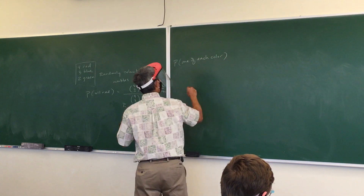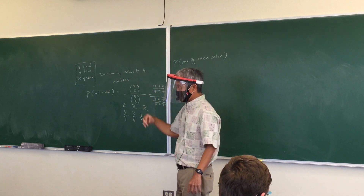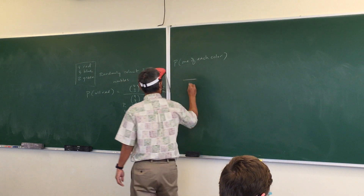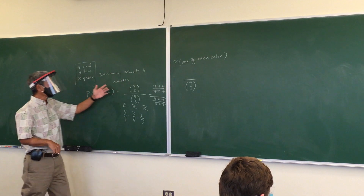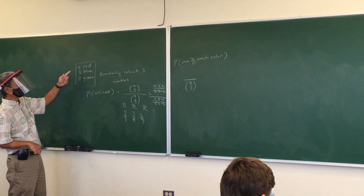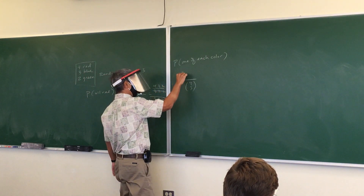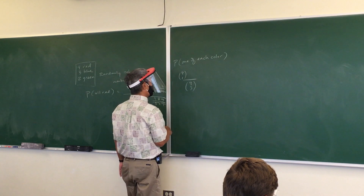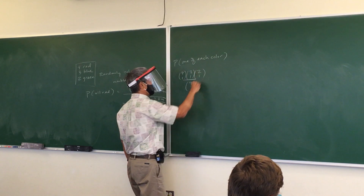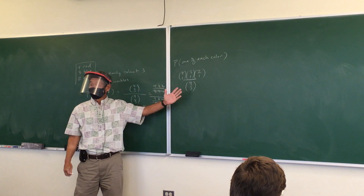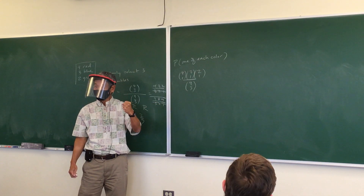If you think about this as a combination — pulling out all three balls at once — the denominator is nine choose three. Now I want one of each color: one red, one blue, one green. How many red balls are in the box? Four. How many ways can I select one of them? Four choose one. How many ways can I pull out a blue ball? Three choose one. And then a green? Two choose one. That's your answer. Do not multiply by anything because there is no order — you pulled out all three balls at once.